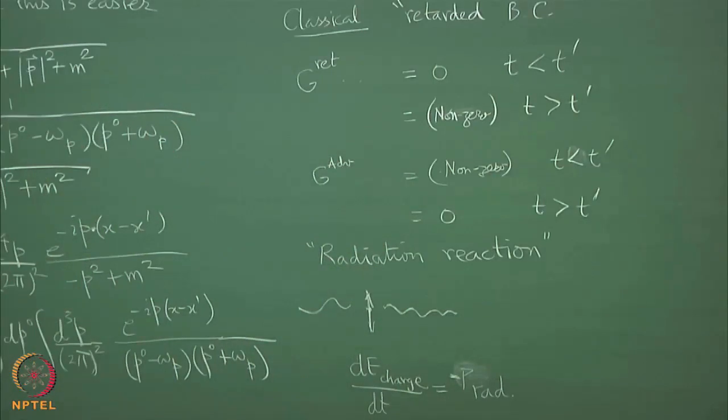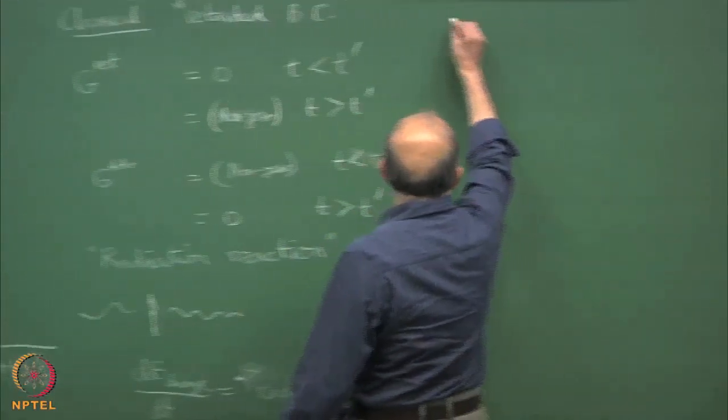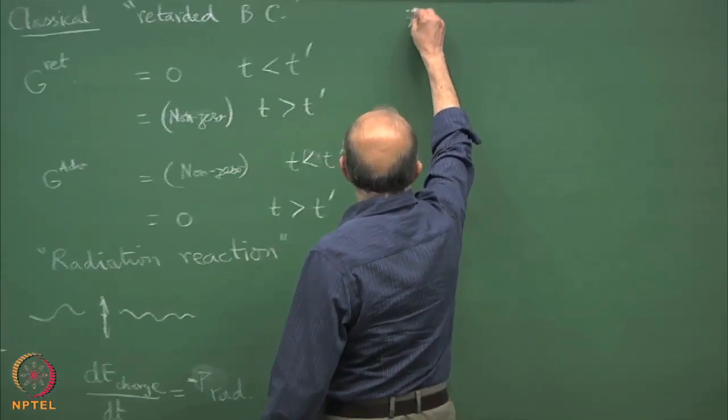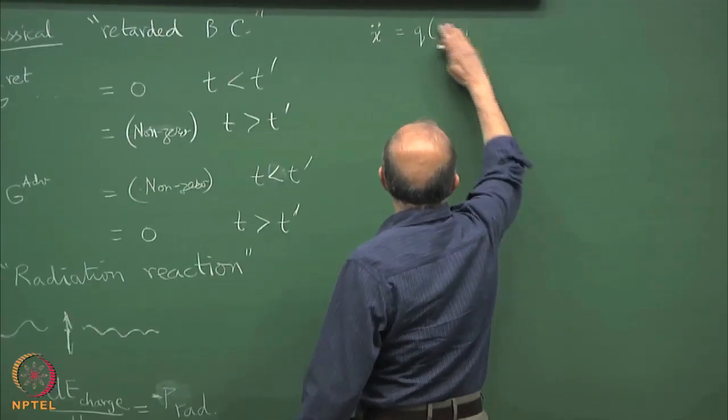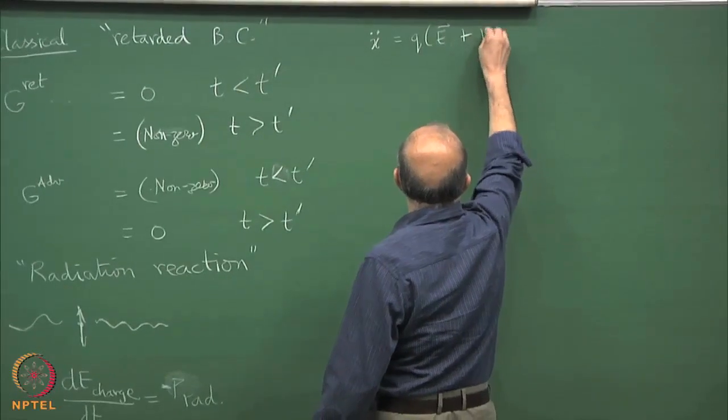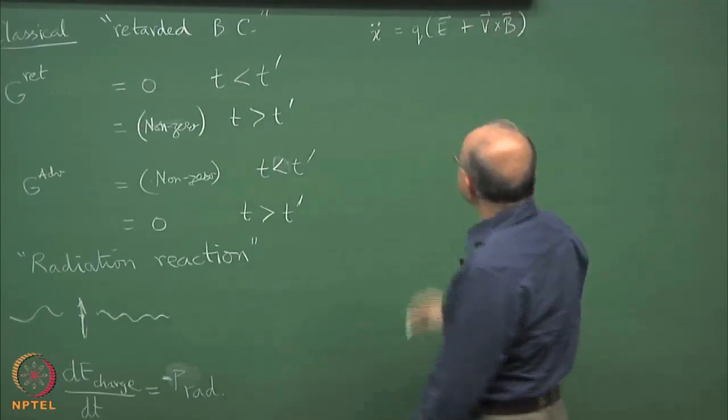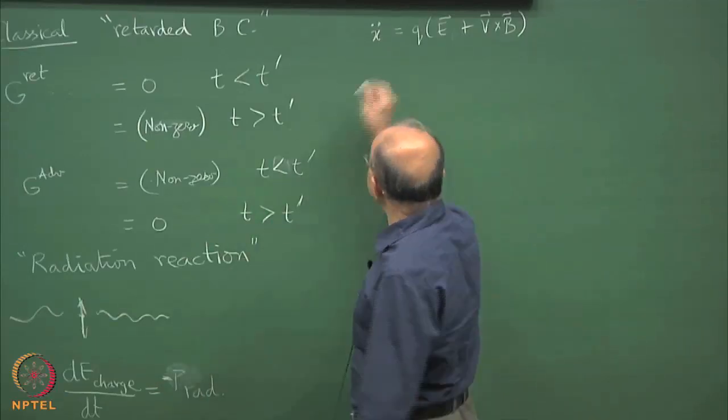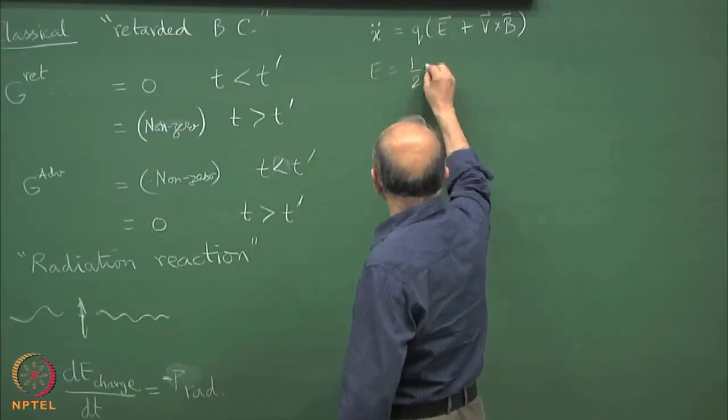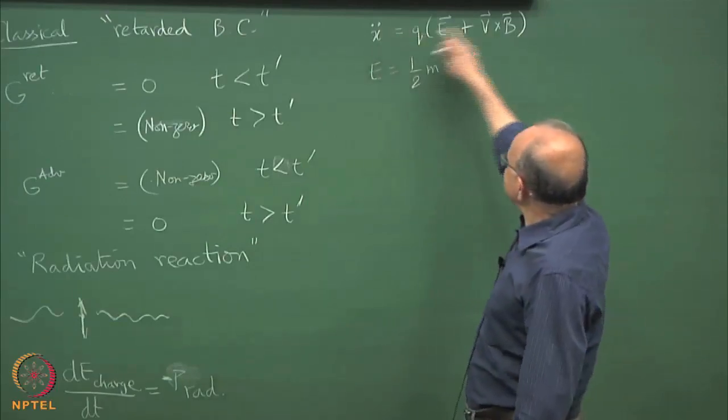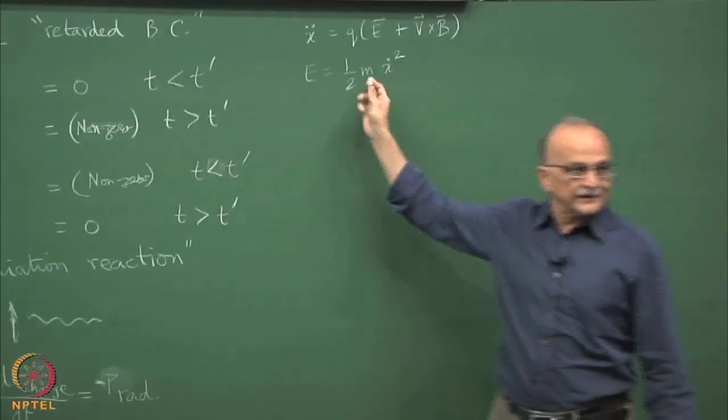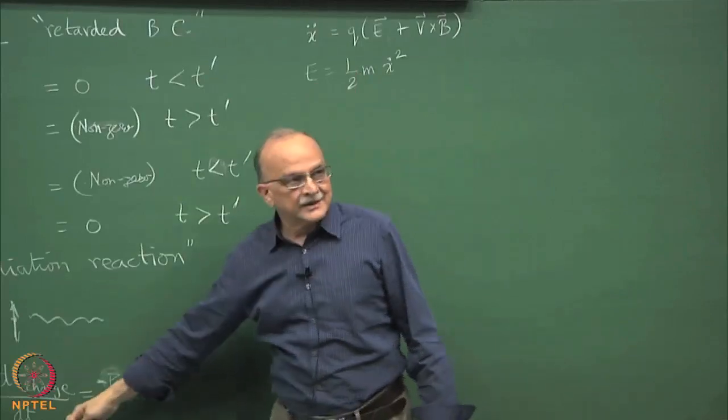Radiation reaction is actually a crisis of classical field theory because what happens is that if you oscillate a charge it emits radiation, so it has to slow down. But can you derive the slowing down from the equations of motion? There is a problem because if I wiggle a point charge radiation goes out. I can of course calculate all the radiation going out and therefore I can calculate the rate of change of energy dE by dt. So dE of charge by dt should be equal to minus the power carried away by radiation.